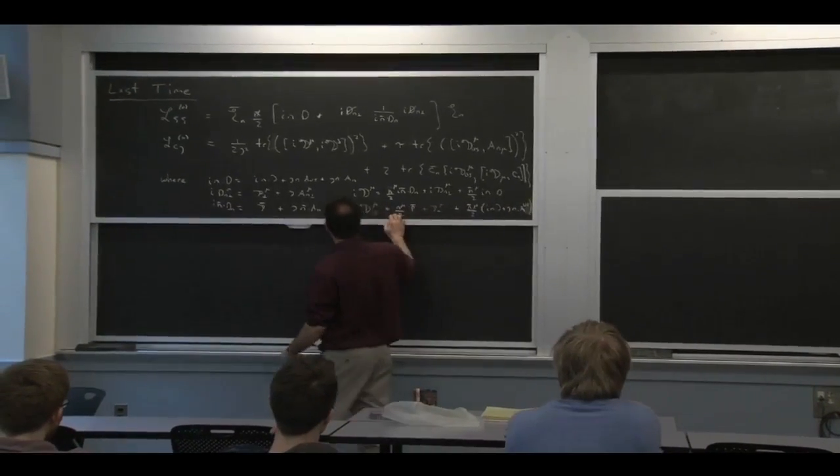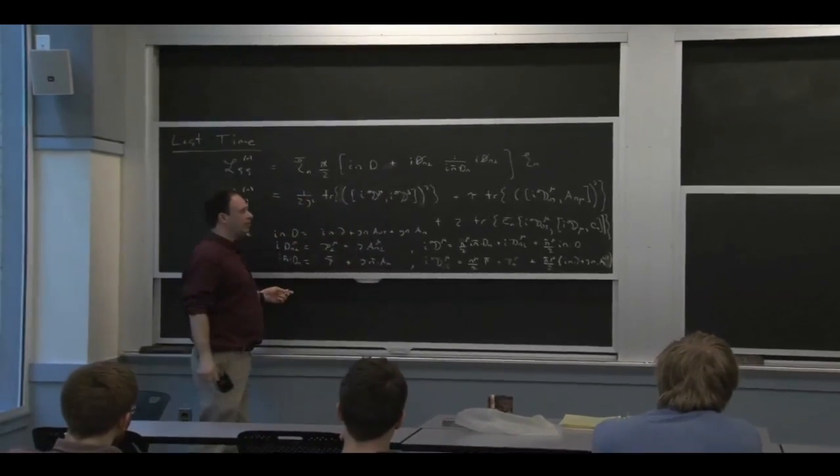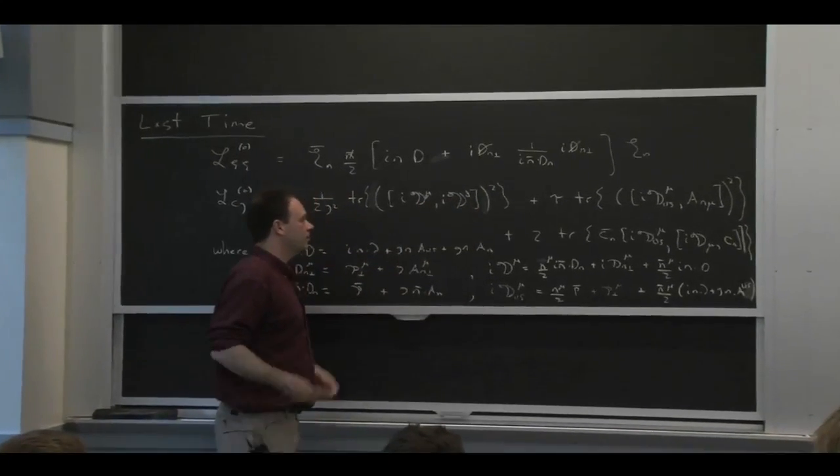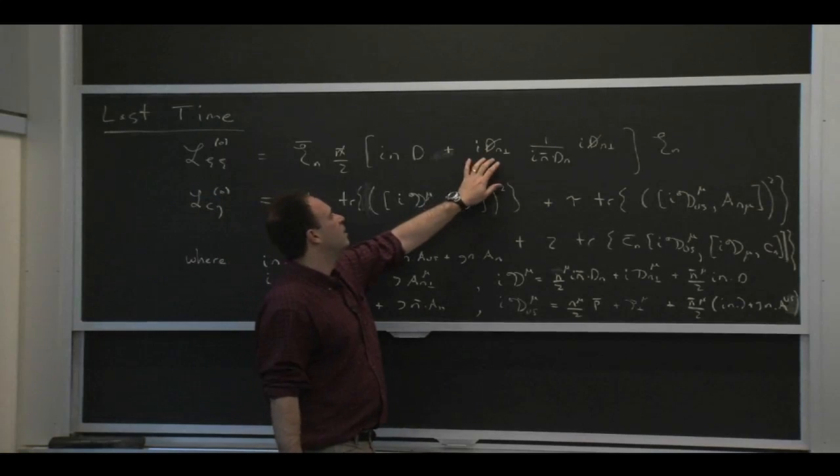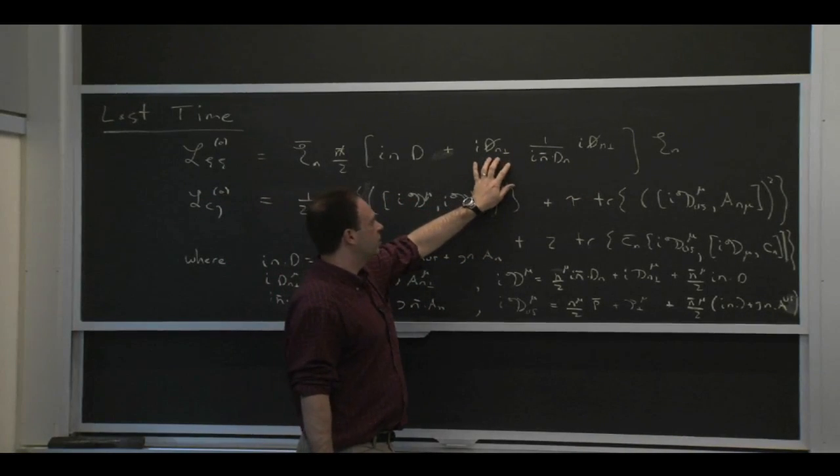Really, the only difference between this and what we talked about earlier is that we had performed the multipole expansion. We distinguished between collinear momenta scaling like a collinear momentum and momentum scaling like an ultrasoft. Only the collinear pieces were showing up in here, and same with the collinear gauge field.